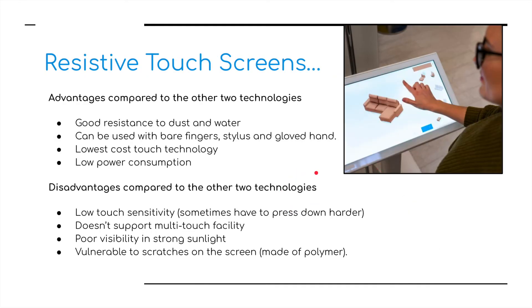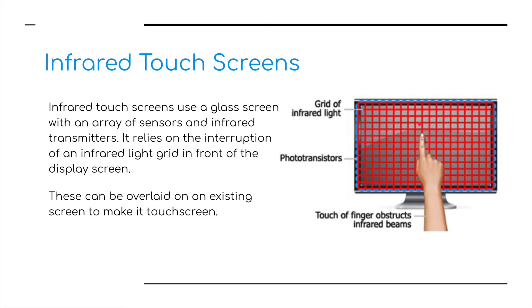Advantages of resistive touch screens: good resistance to dust and water, they can be used with bare fingers, a stylus, or even gloved hands, they're low cost, and have low power consumption. Disadvantages: low touch sensitivity — you sometimes have to press down hard, they don't support multi-touch, poor visibility in strong sunlight, and they're vulnerable to scratches, particularly screens made of polymer or plastic.